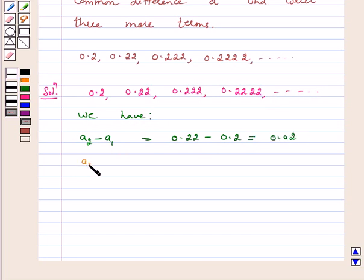Again, a3 minus a2 is equal to 0.222 minus 0.22 which is equal to 0.002.